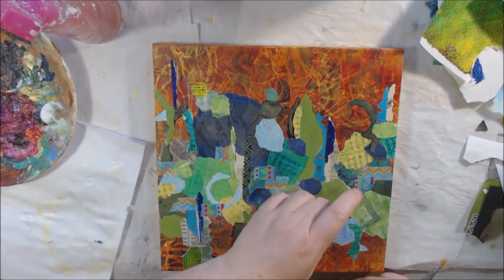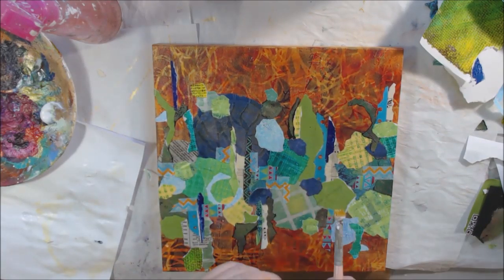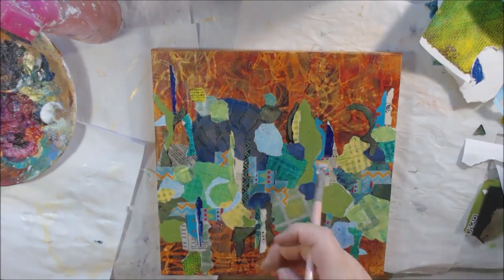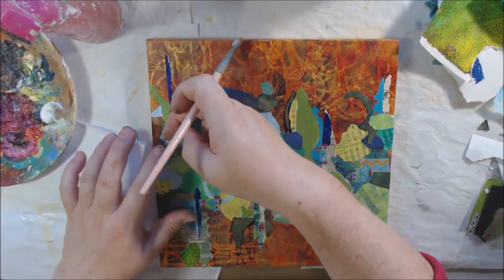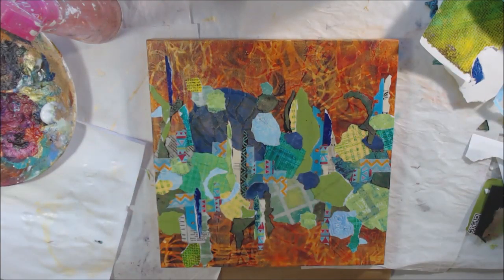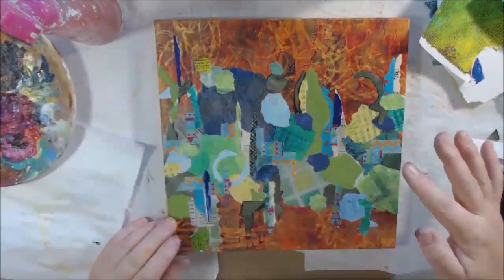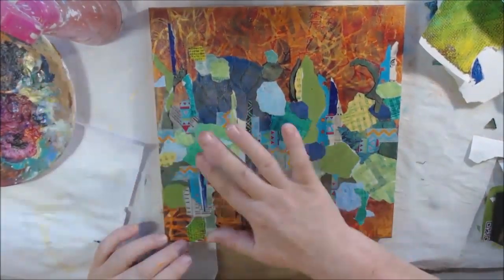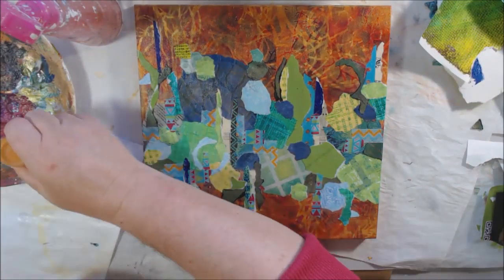These are the little pieces of washi tape that I was talking about that were just stuck along the edge of my table. I decided to put them on because they were interesting and had the right colors. I'm just using the last of my medium to put it on my finger and press everything down, make sure everything is really sealed in.